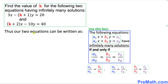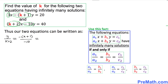Using this fact, our two equations can be written as follows. The coefficient of x is 3, and here the coefficient of x is k plus 2, so I can write the ratio as 3 divided by k plus 2. Then the ratio of the coefficients of y is negative k plus 1 divided by negative 10, and the ratio of constants is 20 divided by 40.